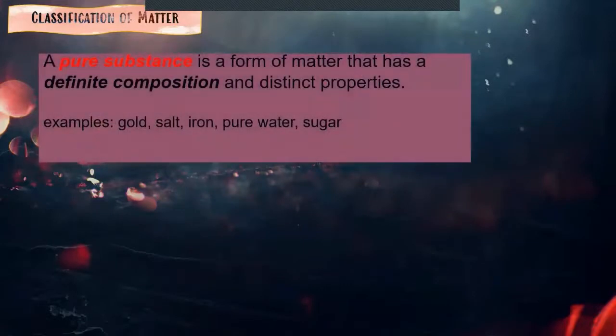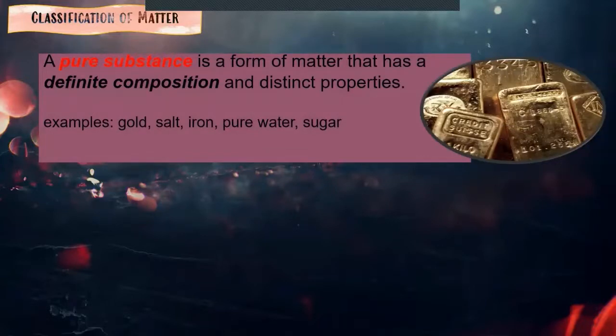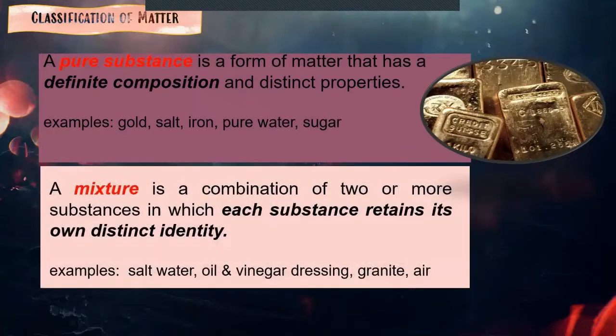Let's differentiate a pure substance from a mixture. A pure substance is a form of matter that has a definite composition and distinct properties. Examples are gold, salt, iron, pure water, sugar. While a mixture is a combination of two or more substances in which each substance retains its own distinct identity. Examples: salt and water, salt water; oil and vinegar dressing, granite, air.